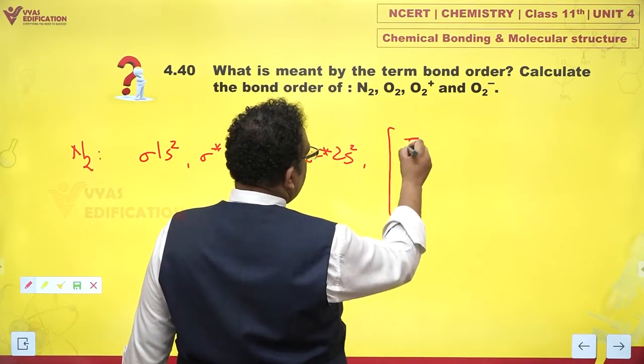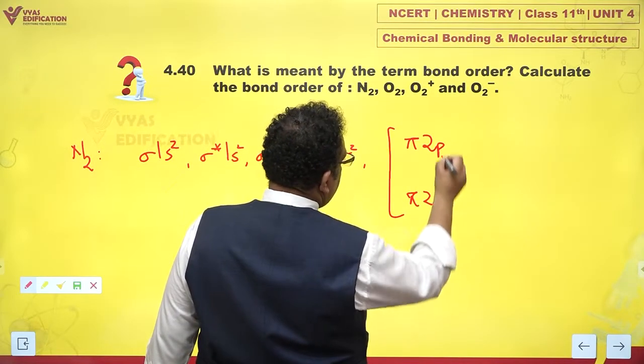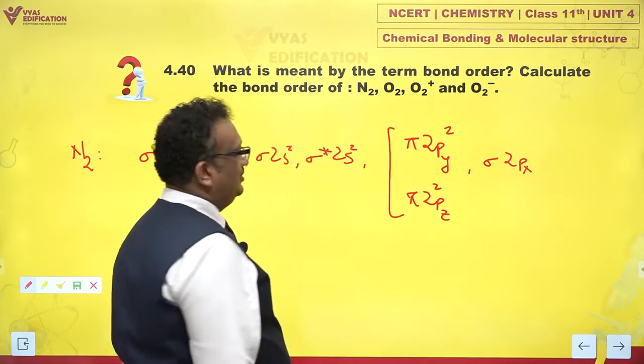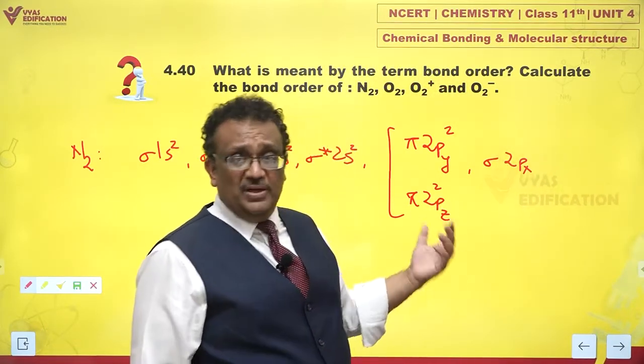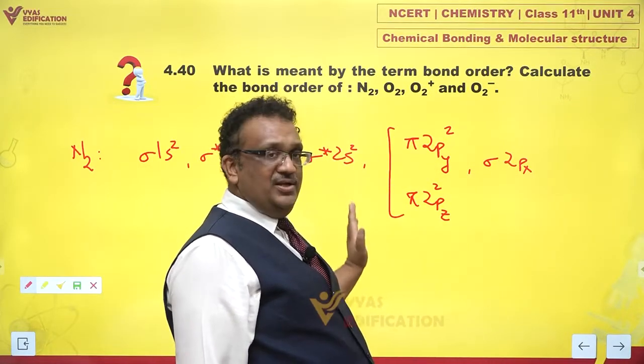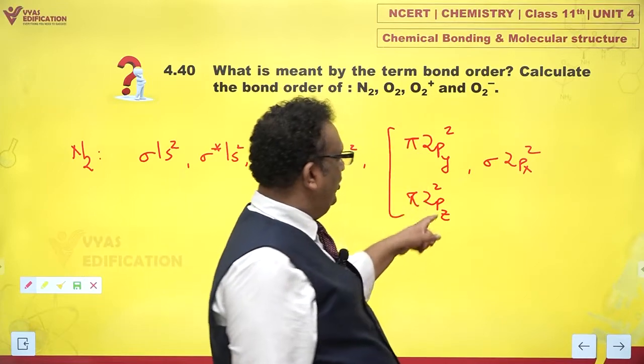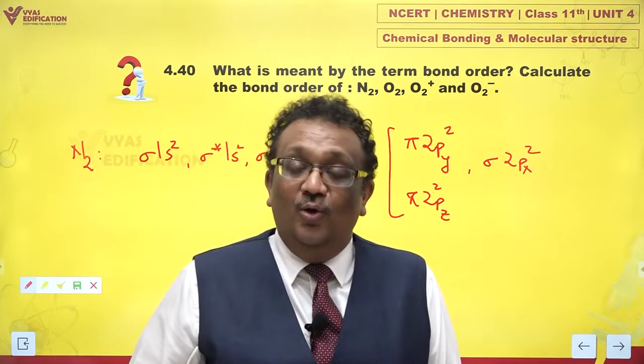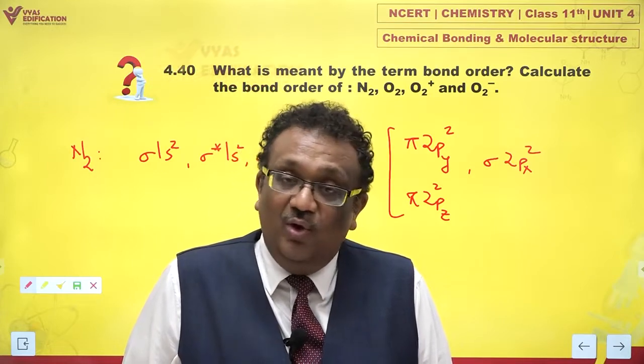Now, if you consider nitrogen, it is pi 2py, pi 2pz, 2,2 and sigma 2px. For the lighter molecules like nitrogen or molar masses below nitrogen, you have pi orbitals having lower energy as compared to sigma 2px. If you count 2 plus 2, 4 and to 6 and 8, 14 electrons, this is done. This is the MO configuration for N2.